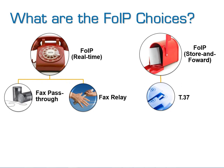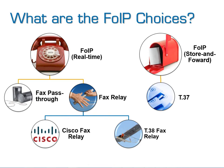On the real-time side, there are two major types: Fax Pass-through and Fax Relay. On the store-and-forward side, we see T37 — which is really just like email and should not be used for enterprise environments. Under Fax Relay, there are two protocols: a proprietary version called Cisco Fax Relay, which only works with Cisco gateways, and the industry standard T38 Fax Relay.